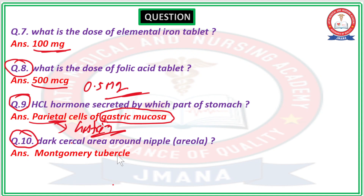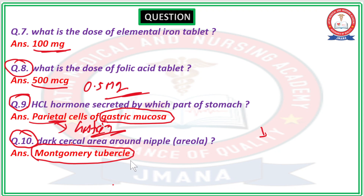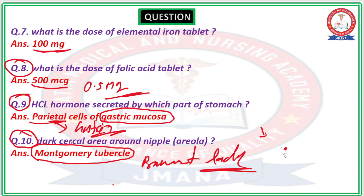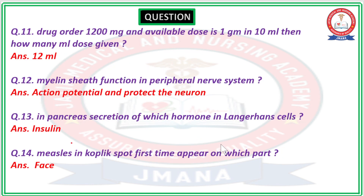Question number 10: What is the direct circle area around the nipple area called? In the breast, around the nipple in females, a circular area forms. This is called the Montgomery tubercle. In a pregnant lady, this Montgomery tubercle is visible on the areola part around the nipple, appearing as dark circular markings outside the nipple area.